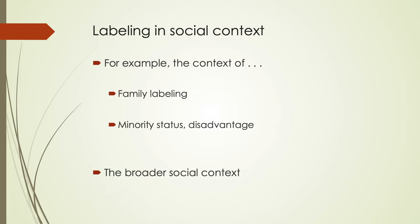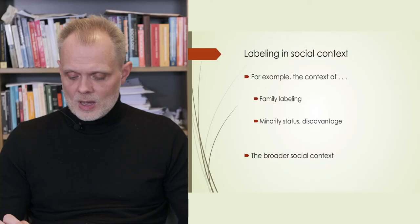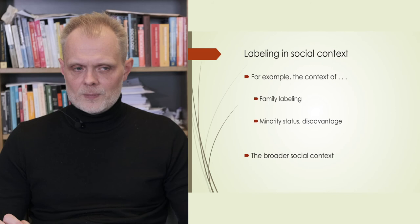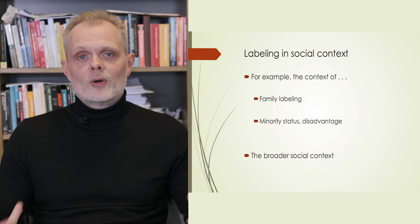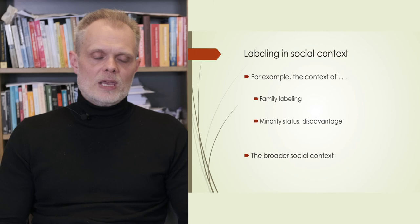The literature suggests various ways to think about when labeling has a particularly harmful effect on the person's life. For example, scholars have found that if you are a son of a convicted father, you are more vulnerable to the effects of labeling. Also, minorities, especially racial minorities, may have a harder time resisting the effect of labeling.